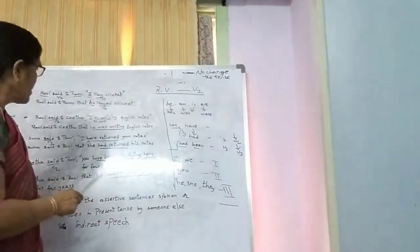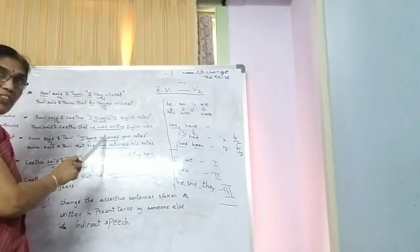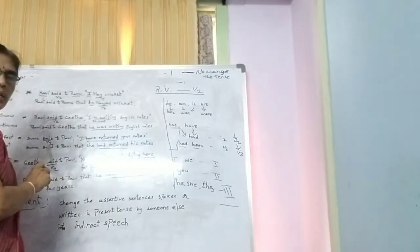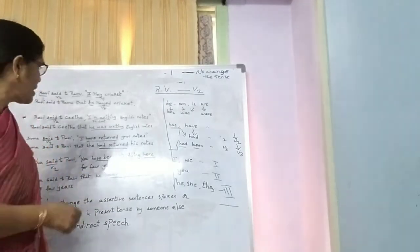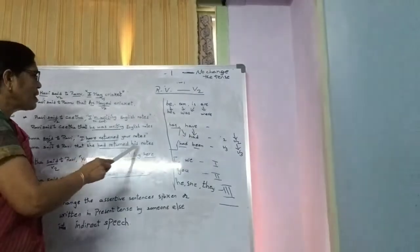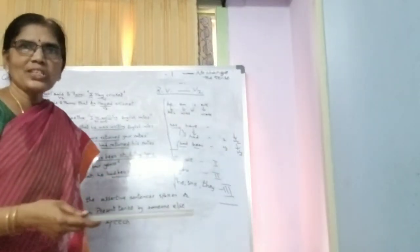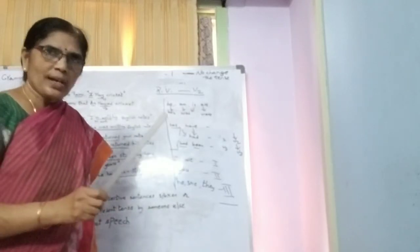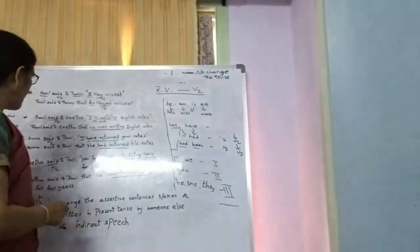Example three — Suma said to Ravi: 'I have returned your notes.' It is in present perfect tense, and the reporting verb is V2. Reported speech: Suma said to Ravi that she had returned his notes. 'I' refers to Suma — third person — so 'I' becomes 'she.' Present perfect 'have returned' becomes past perfect 'had returned.' 'Your notes' — 'you' refers to the listener, who is Ravi — so 'your notes' becomes 'his notes.' Write as many examples as possible in present perfect tense and change them into indirect speech.